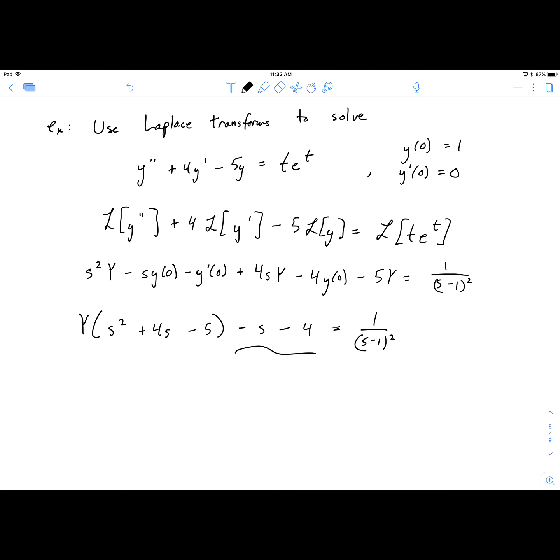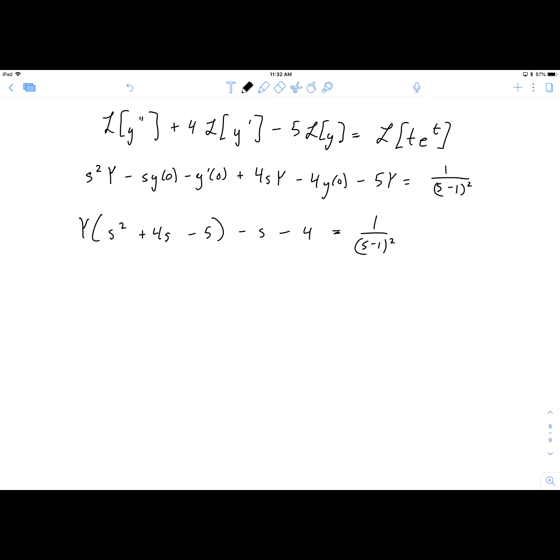So to solve for Y, we're going to add s and 4 to the other side. And then we'll divide by s² + 4s - 5.